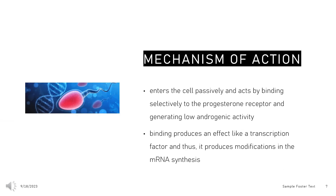Regarding its mechanism of action, Desogestrel enters the cell passively and acts by binding selectively to the progesterone receptor, generating low androgenic activity. Its binding produces an effect like a transcription factor and thus produces modifications in mRNA synthesis. The active metabolite of Desogestrel, etonogestrel, presents a combination of high progestational activity with minimal intrinsic androgenicity.